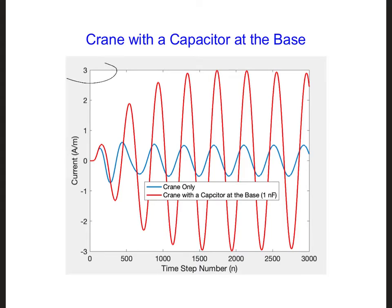Notice that the y-axis here is a bit lower. The plot only goes up to 3 amps per meter instead of 4 amps per meter, as in the previous plot.